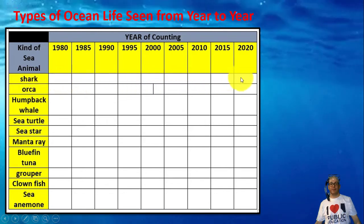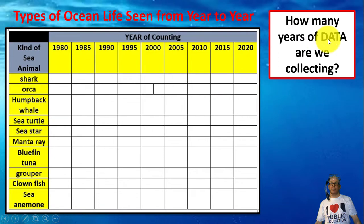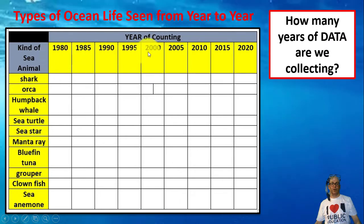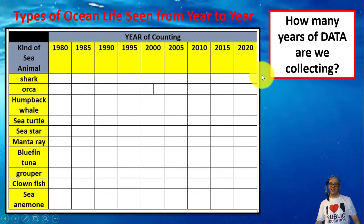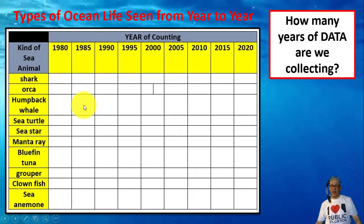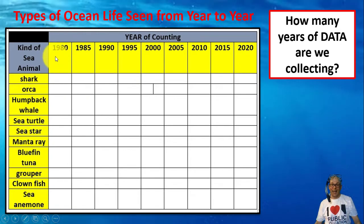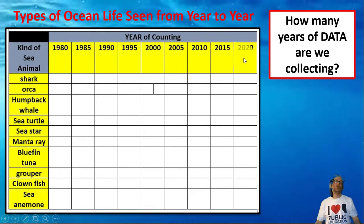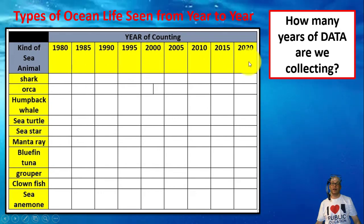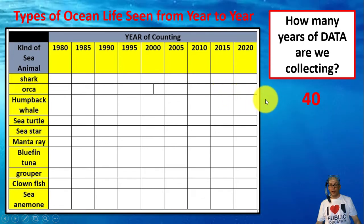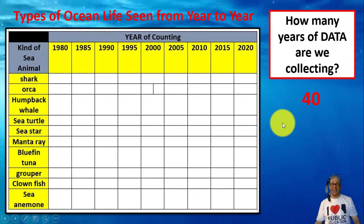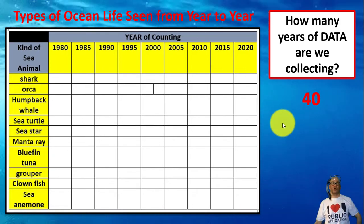This is for keeping and recording information. How many years of data are we collecting? It looks like 9 columns, but actually we're counting all the years from 1980 all the way to 2020 — that's 40 years of data. This takes a long time to make a table like this.